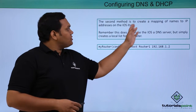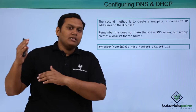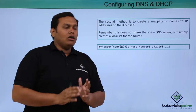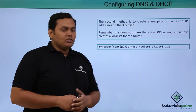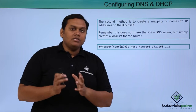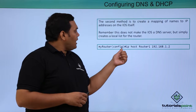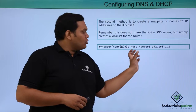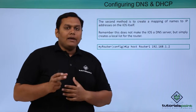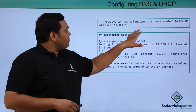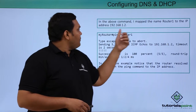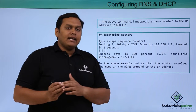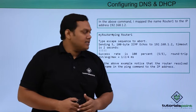The second method is to create a mapping of names to IP addresses on the IOS device itself. Using the command: ip host router1 192.168.1.2, we are directly assigning the IP address to the host name router1. This is the second method of DNS name resolution, mapping names to IP addresses directly on the router.